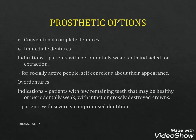Prosthetic options include conventional complete dentures, immediate dentures — indicated for patients with periodontally weak teeth requiring extraction and for socially active people self-conscious about their appearance — and overdentures, indicated for patients with few remaining teeth that may be healthy or periodontally weak with intact or grossly destroyed crowns, or patients with severely compromised dentition.